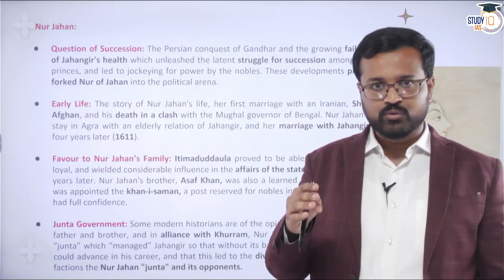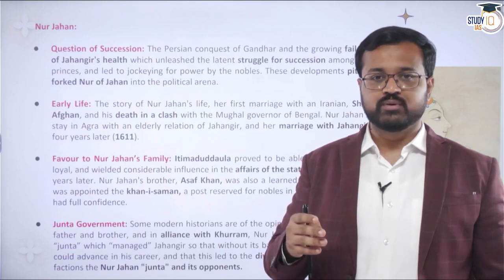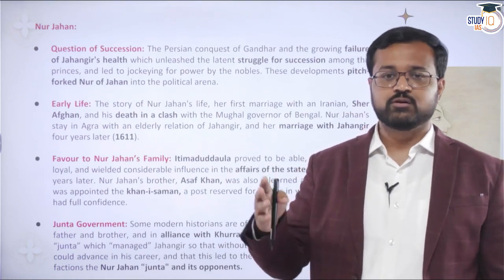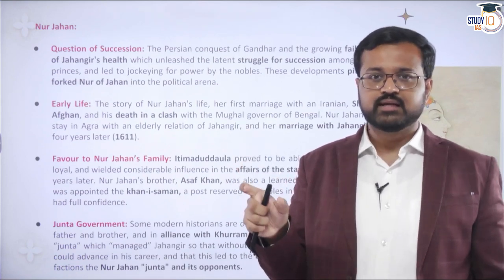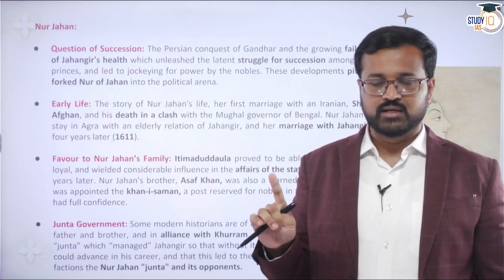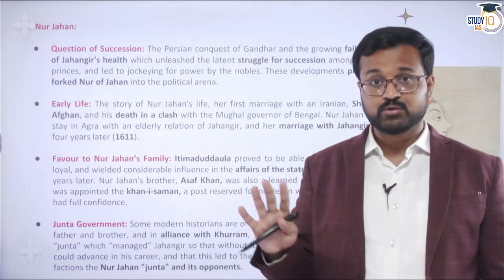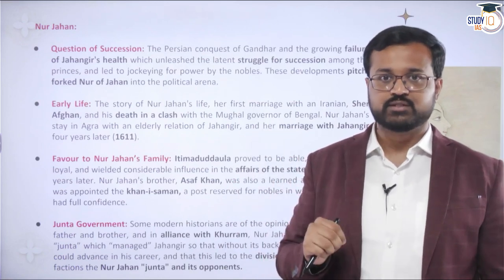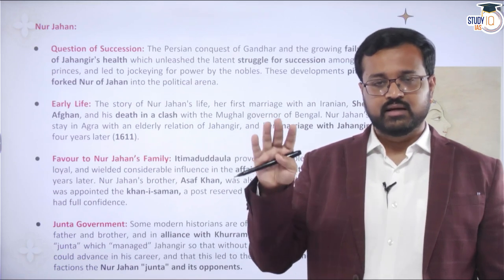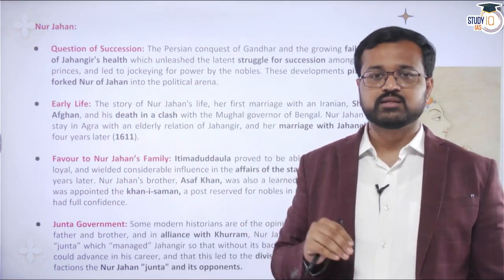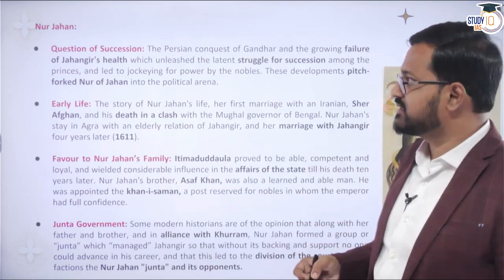Because of Jahangir's deteriorating health, rival factions formed at court and power started going into the hands of a selective group — a junta. This group consisted of Nur Jahan, her father, her brother, and Prince Khurram (who later became Shah Jahan). These four people captured all power, and Jahangir remained under their influence for the rest of his life until his death in 1627.